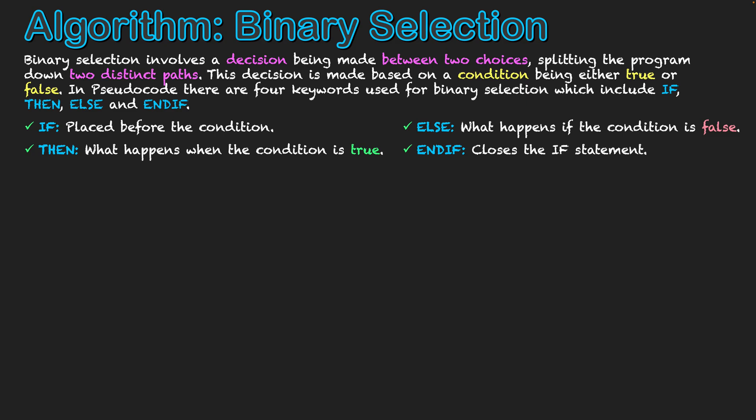So it might be if user guess equals two. And if that condition has been satisfied, then it will take us down to the then statement. Then is what happens when a condition is correct. So if the actual user guess equals two, these processes will take place.